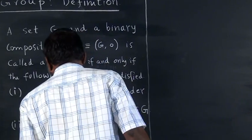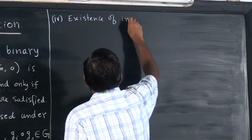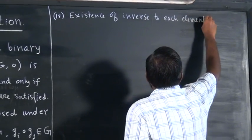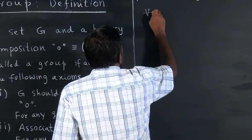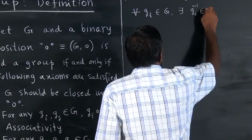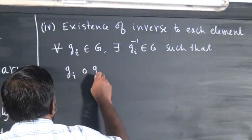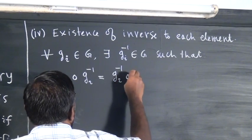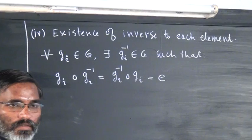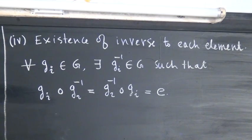The fourth axiom is the existence of an inverse for each element. For all G_i in G, there should exist a G_i inverse in G such that G_i ∘ G_i⁻¹ equals G_i⁻¹ ∘ G_i, which equals the identity. For every element, there must exist an inverse. So if any set with a binary composition satisfies these four axioms, we call it a group.